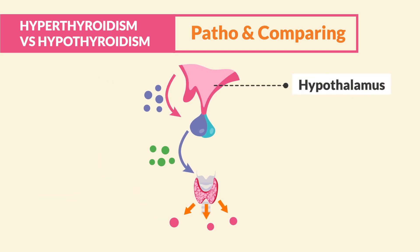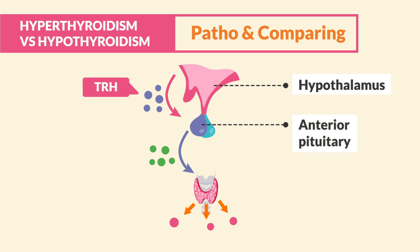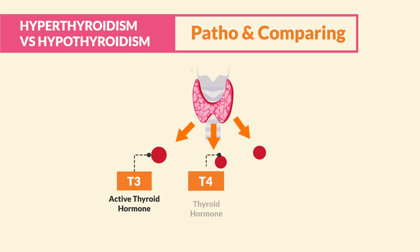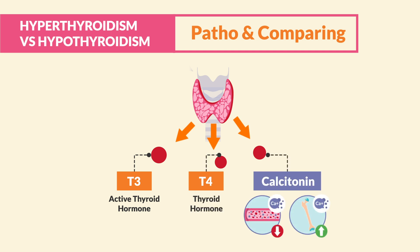The hypothalamus releases TRH, which tells the anterior pituitary to release TSH, the thyroid-stimulating hormone. Then the stimulated thyroid pops out three key players. First is T3, the active thyroid hormone. Next is T4, the regular thyroid hormone. And lastly is calcitonin, which tones down the calcium in the blood by putting a ton of calcium into the bone.